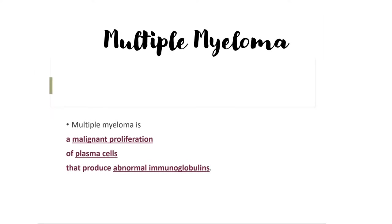Multiple myeloma by definition is a malignant proliferation of plasma cells that produce abnormal immunoglobulins. In simpler terms, it is a cancer of a particular type of blood cells known as the plasma cells.